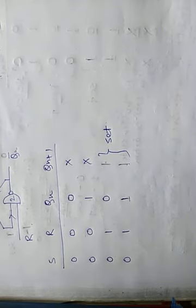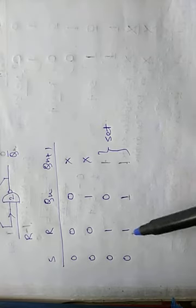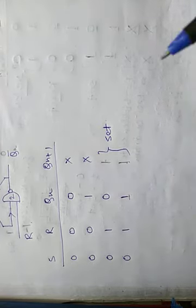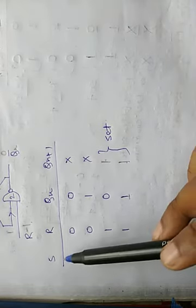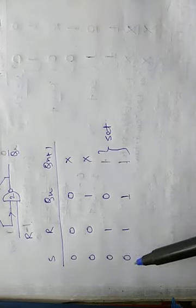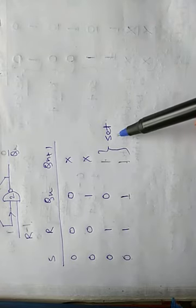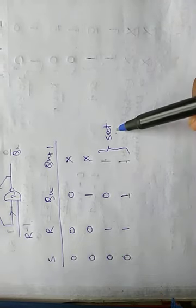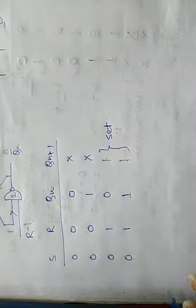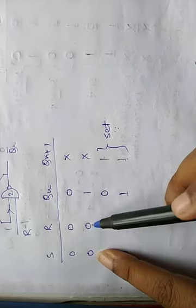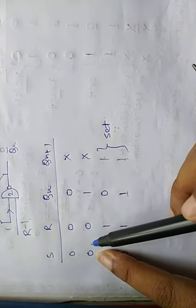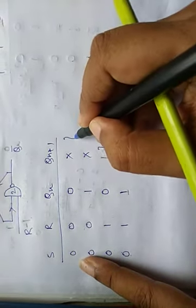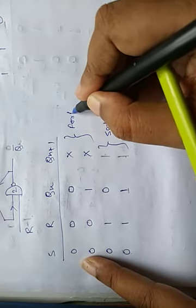When output Qn+1 is 1, it is the set condition. Notice this is totally reverse of NOR latch: in NOR latch when S=1 the latch is set, but here when S=0 the latch is set. Also in SR NOR latch when both S and R are 1 it is the forbidden state, but here in NAND latch when both S and R are 0 it is the forbidden state.